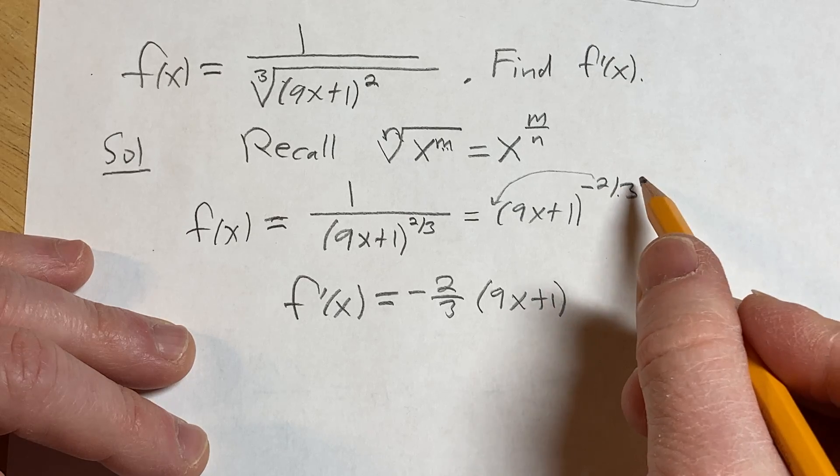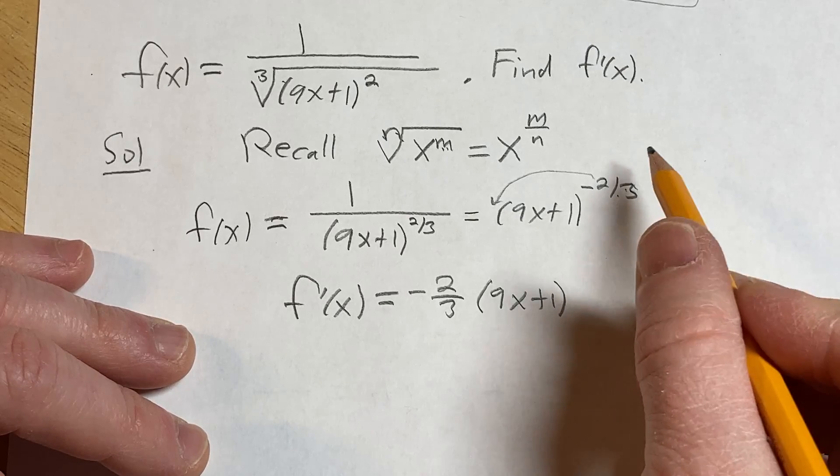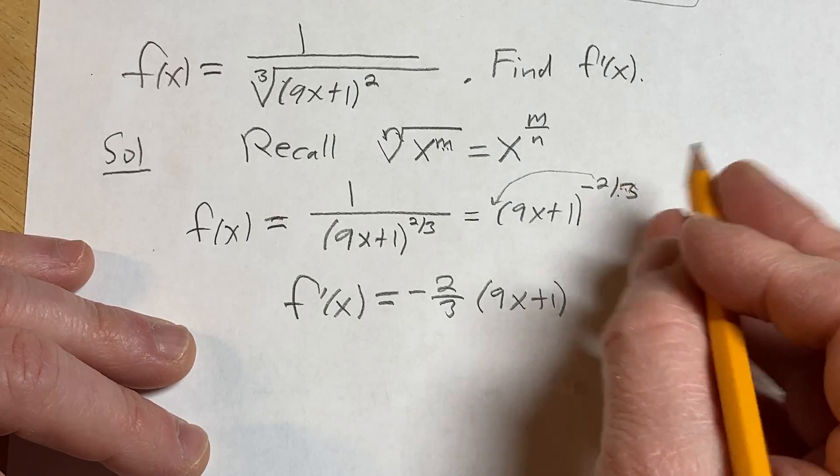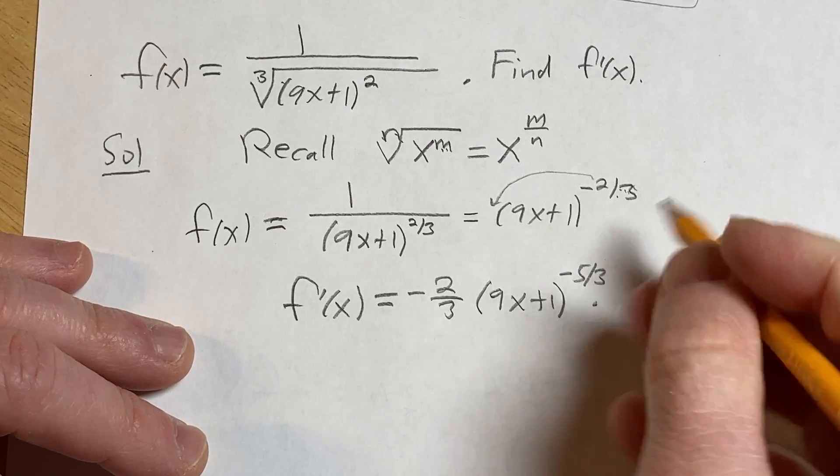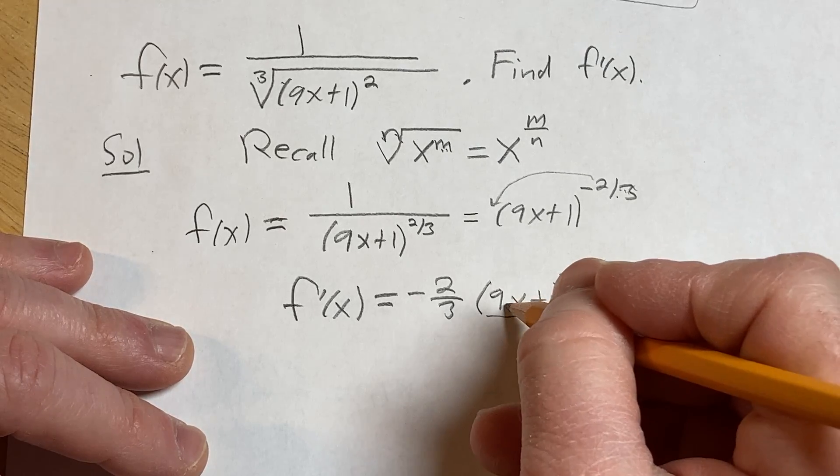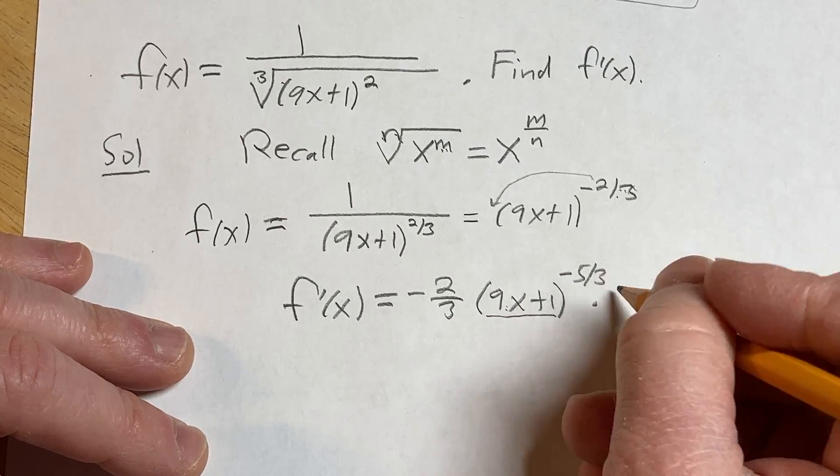Subtract 1 from the exponent. So -2/3 minus 1 is -2/3 minus 3/3, which is -5/3, times the derivative of the inside function, which is simply 9 because the derivative of 1 is 0.